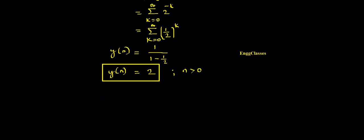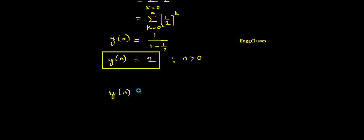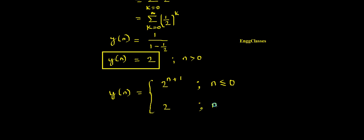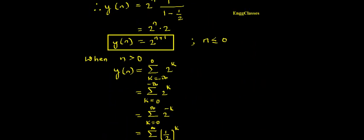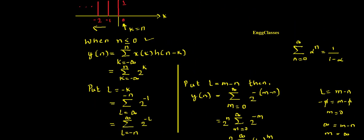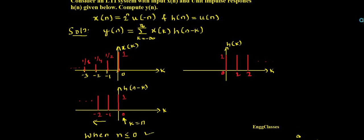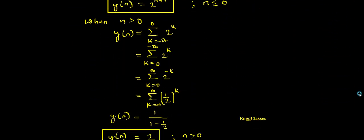Combining together, the final answer is: y of n equals 2 to the power n plus 1 for n less than or equal to 0, and y of n equals 2 for n greater than 0. This is one of the numericals on convolution sum, explained step by step. I hope you have understood. If you still have any doubts, please let me know in the comment section and I would definitely answer those doubts. Thank you so much for watching.